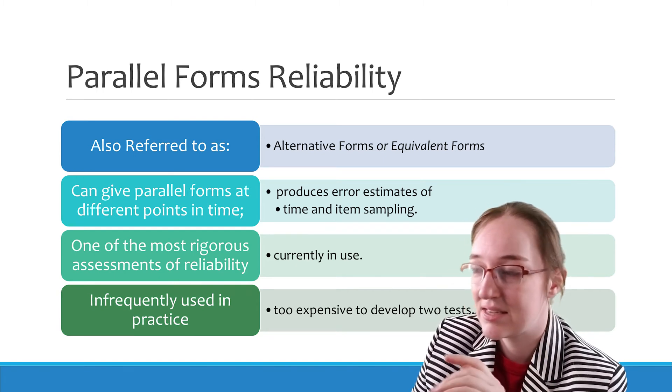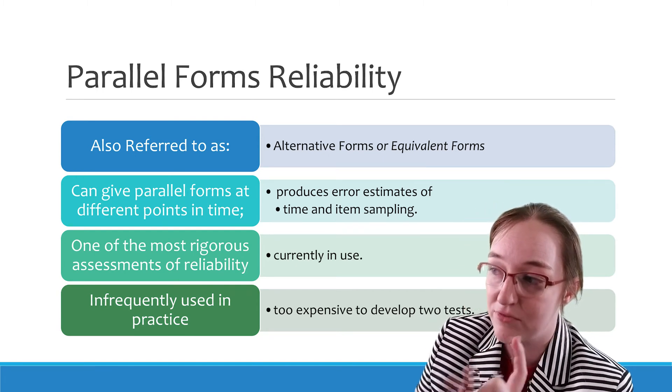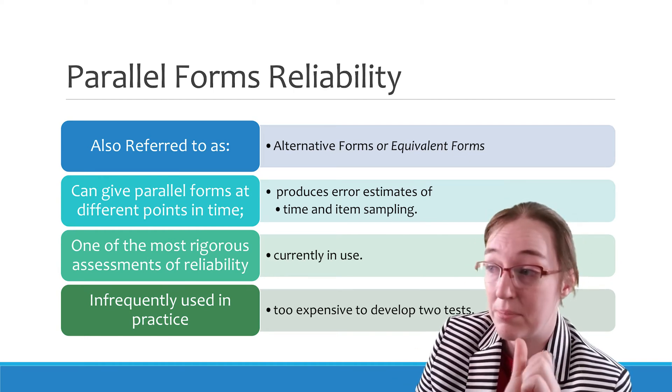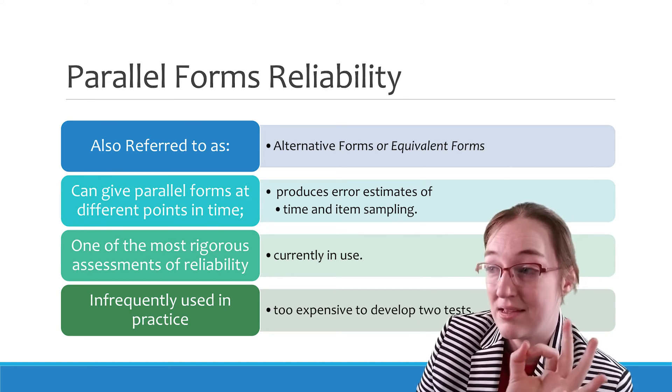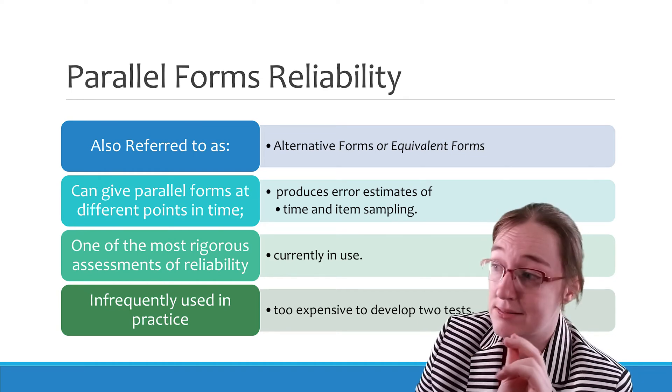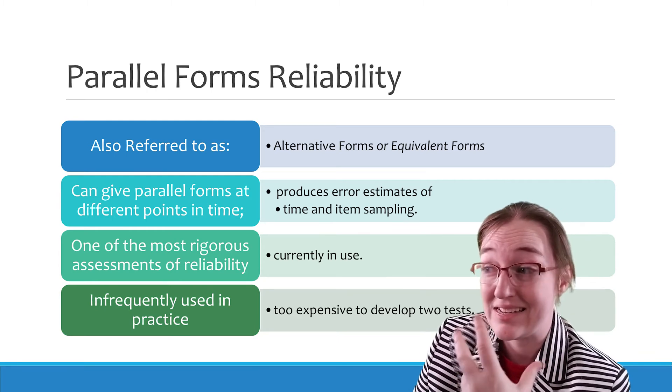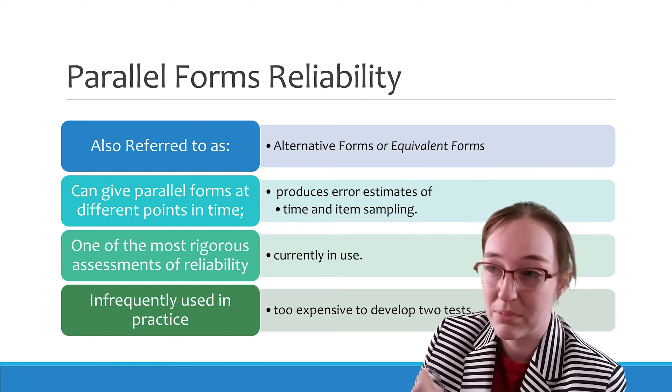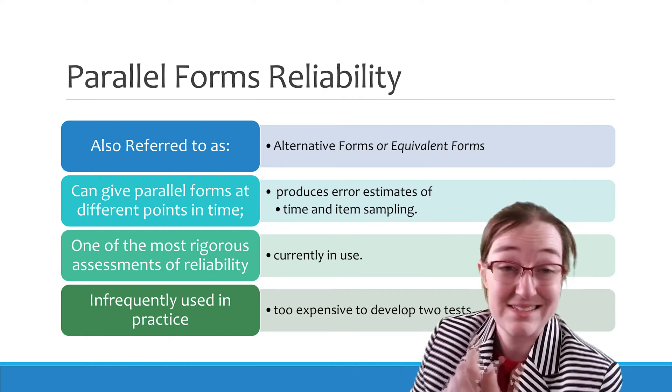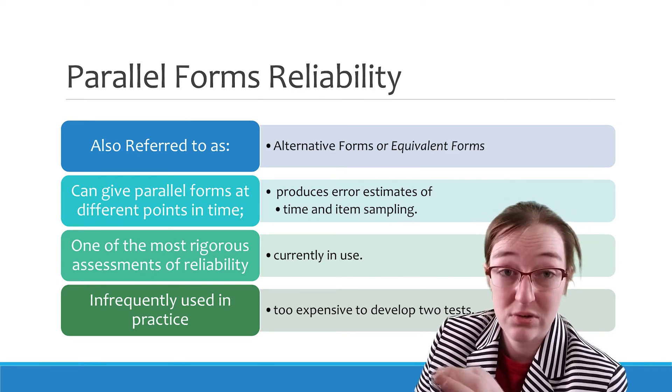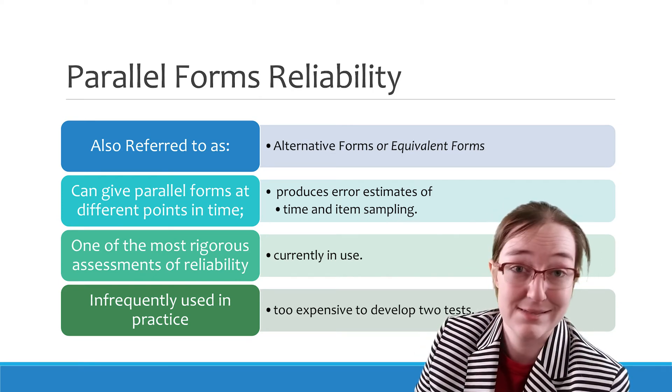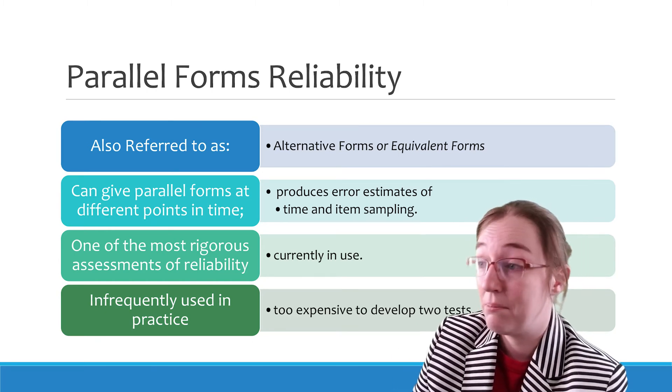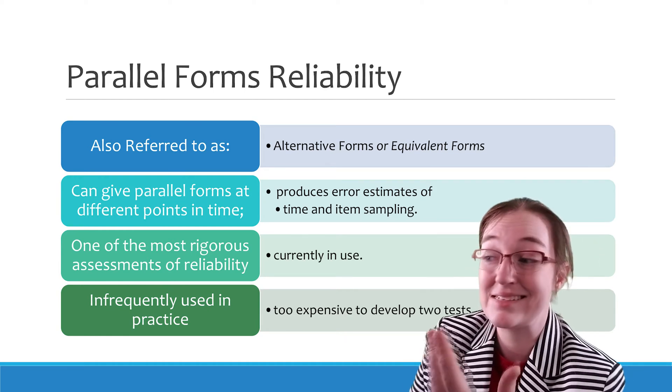So, the idea here is that by giving parallel forms at different points in time, you can produce an error that estimates both time and item sampling. So this is one of the most rigorous assessments of reliability in use, and unfortunately, because it's really expensive to develop these kinds of tests, that's actually why you have to pay a lot of money for the GRE, because they are making an infinite number of tests with tons of items and doing this all the time. But it is infrequently used in practice because it is expensive.